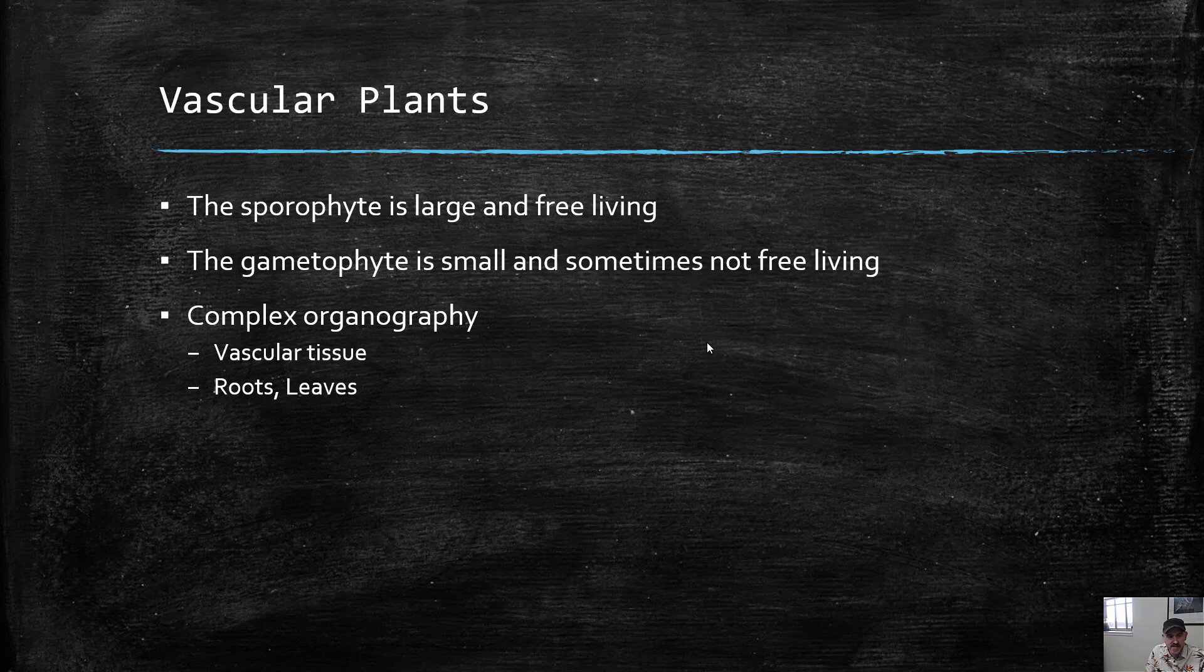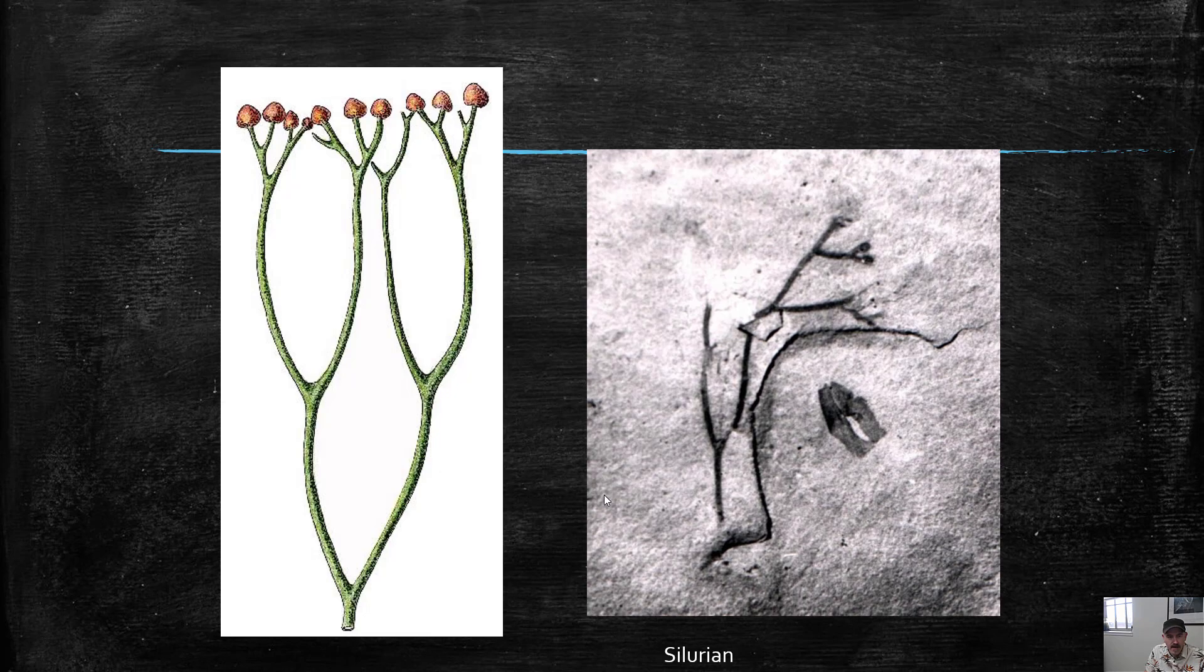We don't see true roots and leaves in the mosses. Here's an early example from the fossil record of Cooksonia, a really early vascular plant. You can just see it has this dichotomously branching stem with sporangia on the tips where the spores were produced.